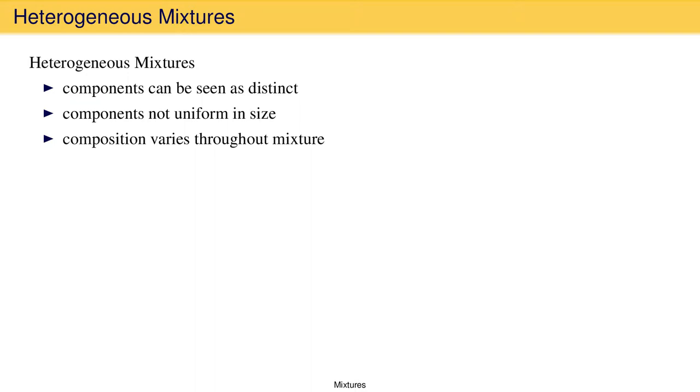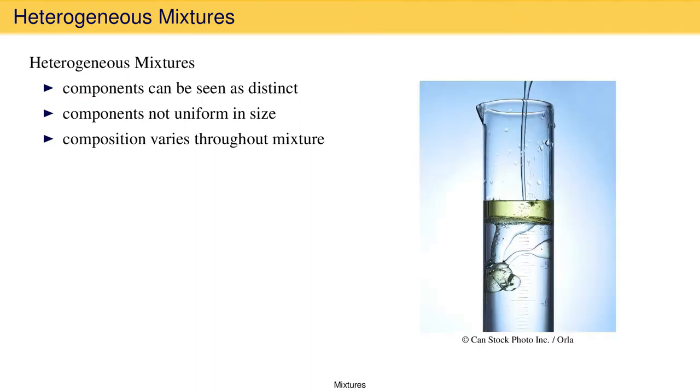An example that illustrates all of these characteristics is oil mixed with water. The oil and water can definitely be seen as distinct from each other. Also, the bits of oil are not the same size in all parts of the mixture. This blob of oil on the left, for instance, is larger than this blob of oil on the right.